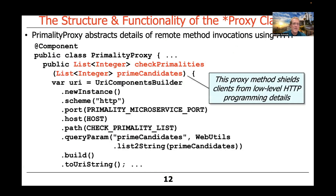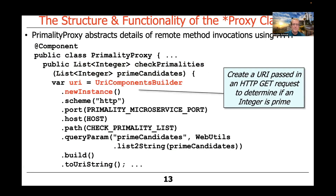We're going to look at a different way to implement checkPrimalities when you don't have the REST template pre-configured to talk to a particular server. We're going to take the URIComponentsBuilder class and create a new instance of it using the newInstance factory method, giving us a new URIComponentsBuilder object.